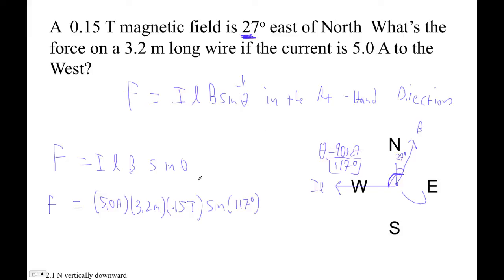Or you go sine of 27. You're like, well, I don't know. I get the right action. Because you did the wrong angle. Okay. So five times 3.2 times 0.15 times sine of 117 is 2.138 Newtons, right?